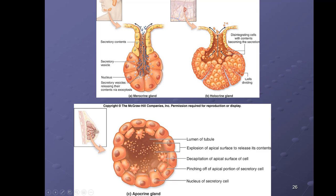Apocrine glands: the substance accumulates in the cell, and the apical portion of the cell is pinched off, causing the substance to be released. Think apocrine — apical portion of the cell, as you can see in the image, is pinched off and the substance is released. The example is the mammary glands.